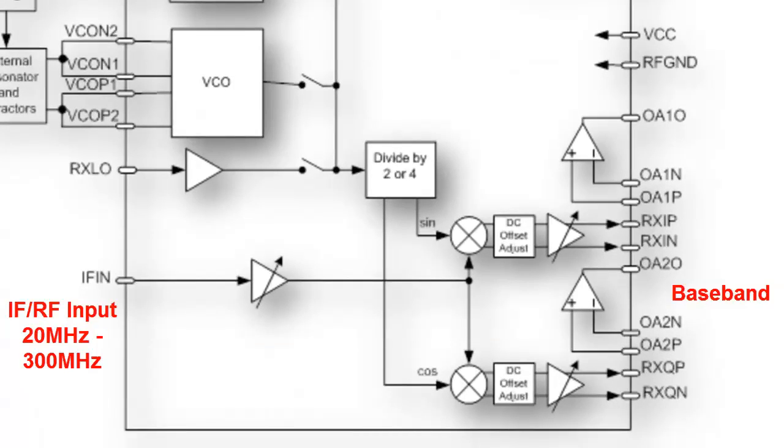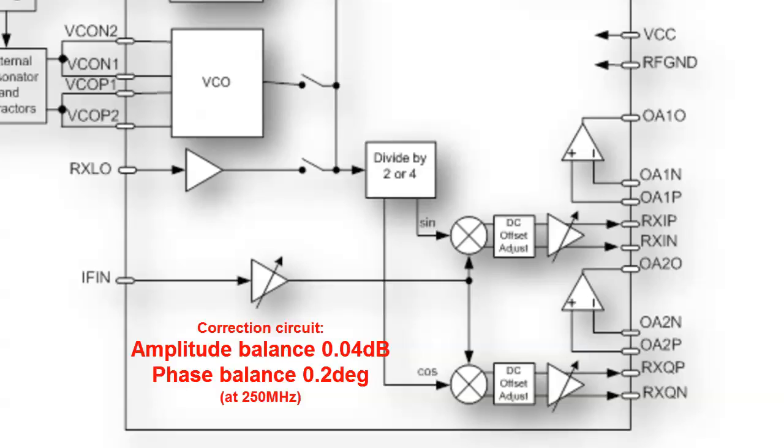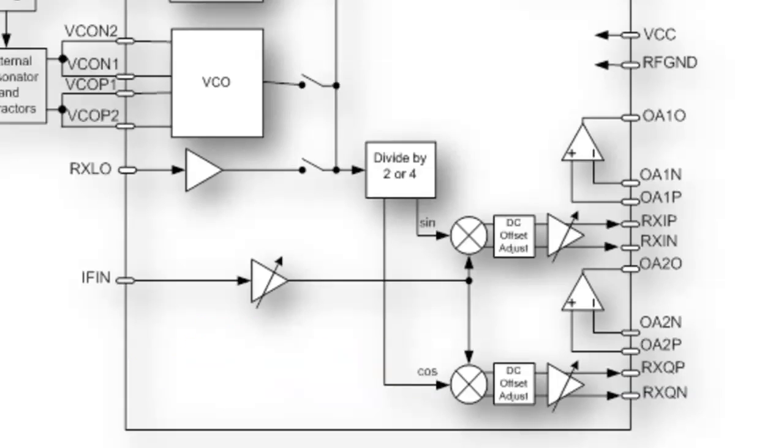For the receive section, the IF or RF input is down converted to baseband. A correction circuit can be enabled to improve IQ amplitude and phase balance at higher frequencies. Two gain stages are independently controllable to allow for trade-off between noise figure and intermodulation performance. DC offsets can be trimmed out with the CMX973 DC offset correction feature. Baseband outputs are provided in a differential manner. The uncommitted amplifiers can be used to develop a single-ended output if desired.